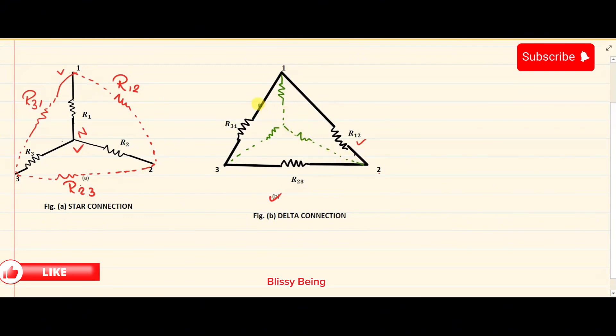That's how we can convert a delta connection into a star connection and name it as R1, R2, R3.